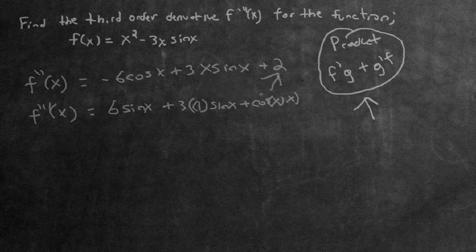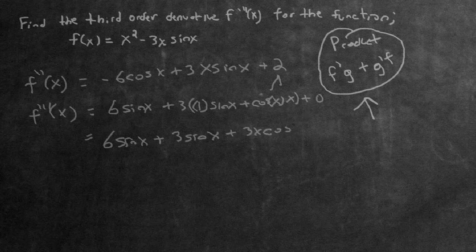Now we take the derivative of the last term — that's just going to be 0. Simplifying the third order derivative, we have 6 sine x, then 3 sine x, then plus 3x cosine x. We can combine the two sine x terms, so we get 9 sine x plus 3x cosine x.